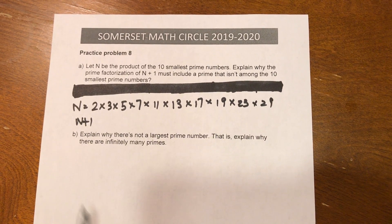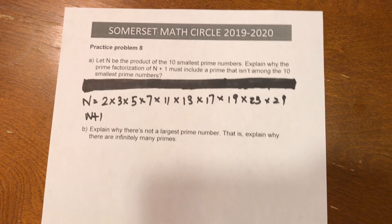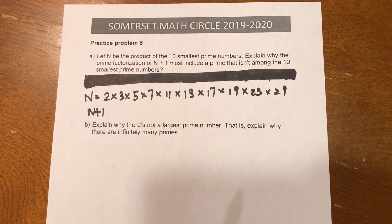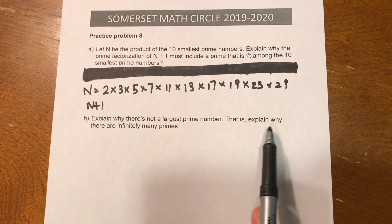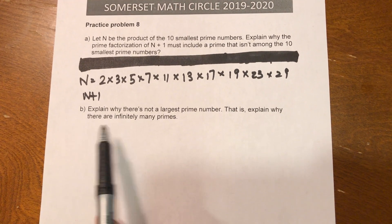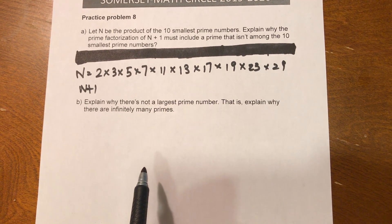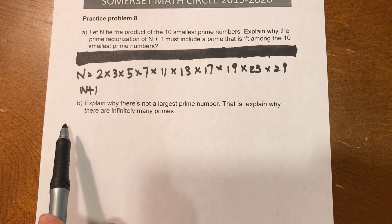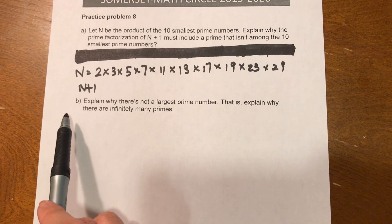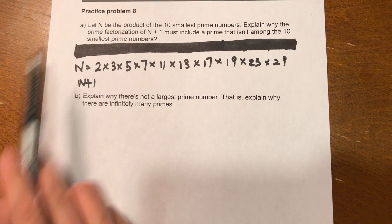B. Explain why there is not a largest prime number — that is, explain why there are infinitely many primes. This one is a little hard to explain without part A.